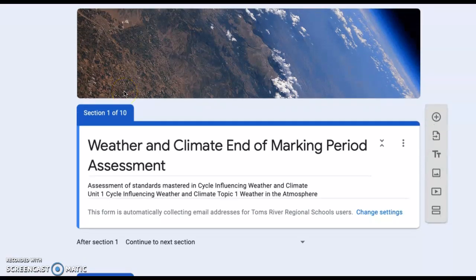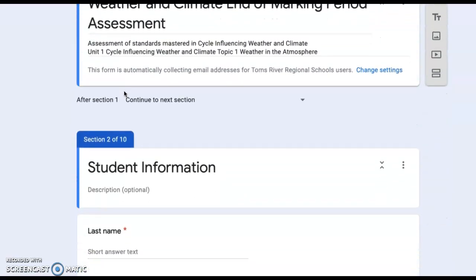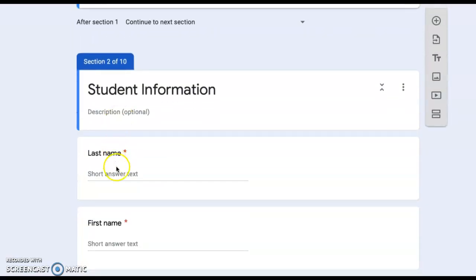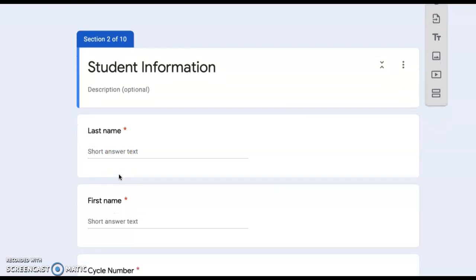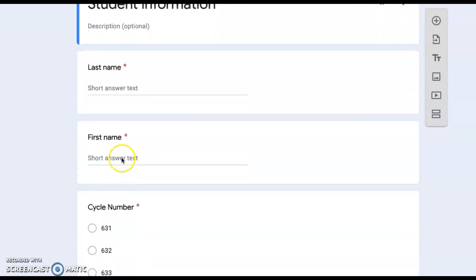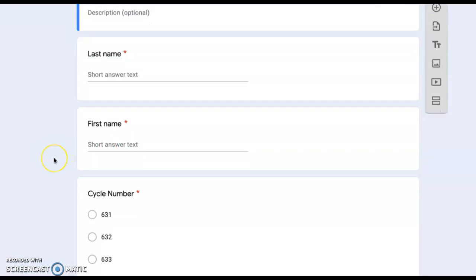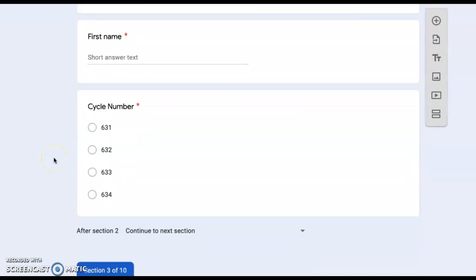Weather and climate end of marking period assessment. Student information: first, type your last name in the box here. Next, type your first name in the box here. Now you will select your cycle number.